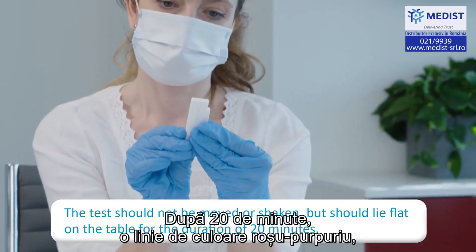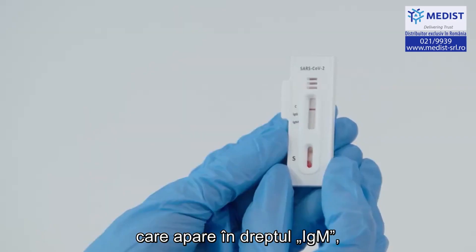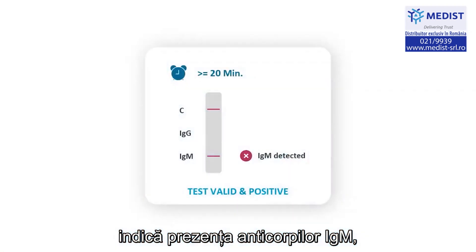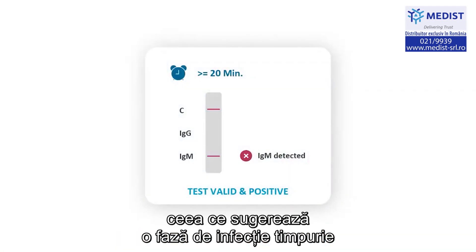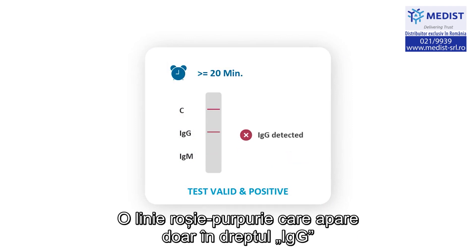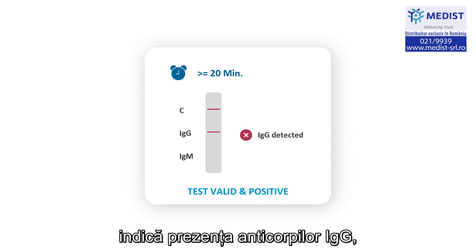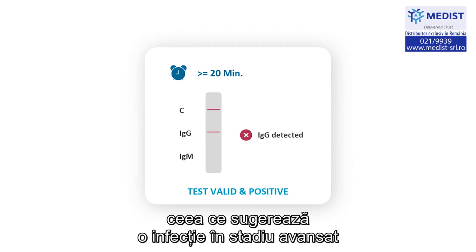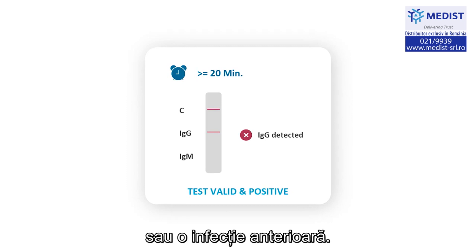After 20 minutes, a purplish-red line appearing at the IgM line indicates the presence of IgM antibodies, suggesting an early infection phase of SARS-CoV-2. A purplish-red line appearing only at the IgG line indicates the presence of IgG antibodies, suggesting a later stage infection or past infection event.